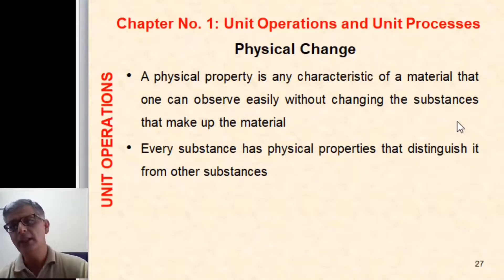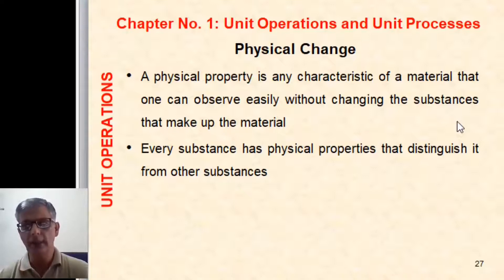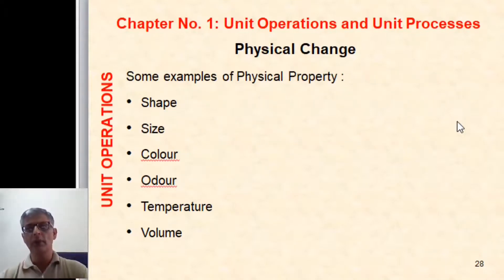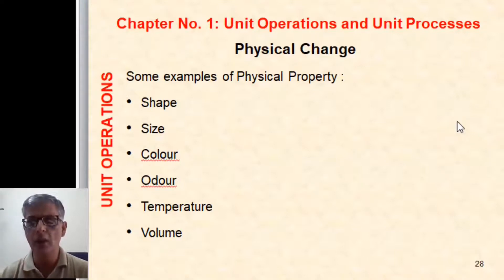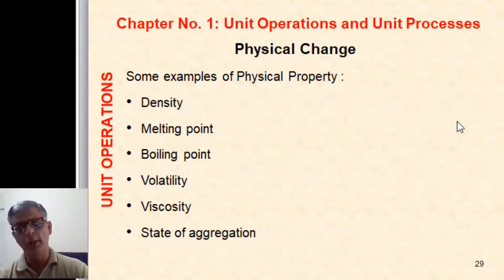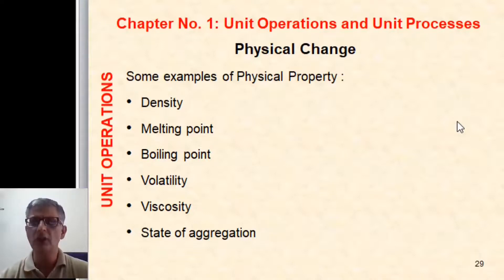A physical property is a characteristic of a material that one can observe easily without changing the substances that make up the material. Every substance has physical properties that distinguish it from others. Some examples of physical properties are: shape, size, color, odor, temperature, volume, density, melting point, boiling point, volatility, viscosity, and state of aggregation. Whenever there is a change in physical property, we can say there is a physical change.